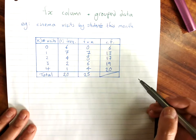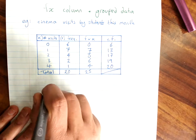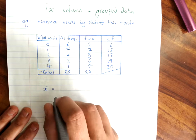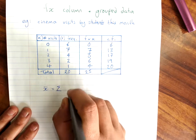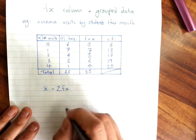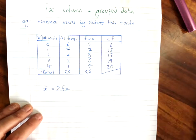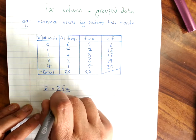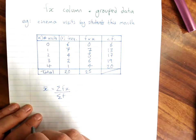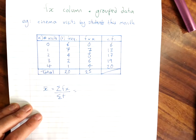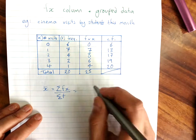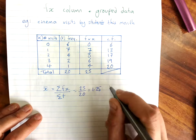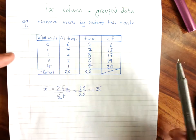What this does is give you a shortcut for finding the mean, because the mean is the sum of the FX column — that's the total of all your data — divided by the sum of the frequency column, because that's the number of scores. So your mean for this data is 25 divided by 20, which is 1.25.